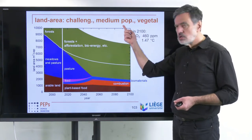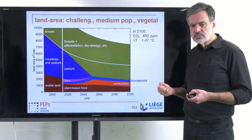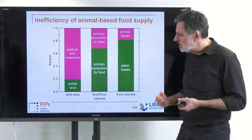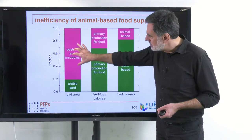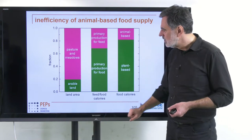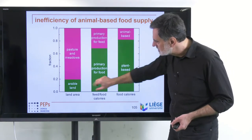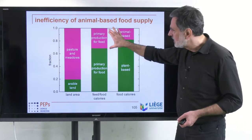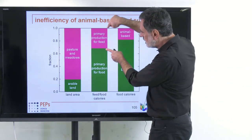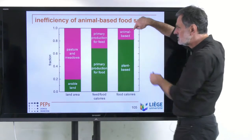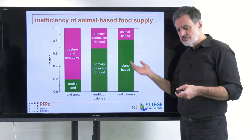The major drivers are clearly population growth and the way in which we produce our food. Concerning land area efficiency: arable land produces plant-based foodstuff and feed on a small fraction of total land, while a large fraction of land is used for pasture and meadows. From the large amount of feed, we produce only a small fraction of final food calories as animal-based products. We are using a large additional land area to get this small fraction of animal-based calories — which is totally inefficient.